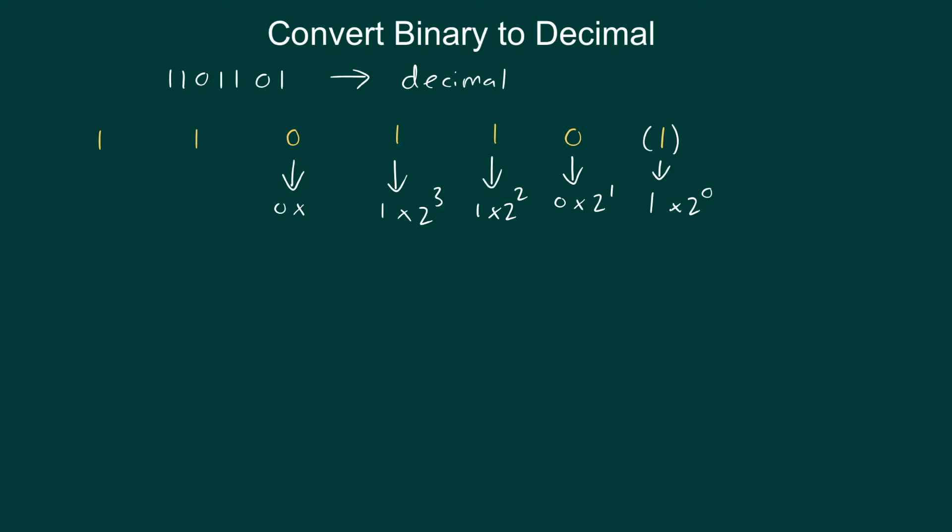So 0 times 2 to the 4. 1 times 2 to the 5. And 1 times 2 to the 6. And you'll see these zeros actually don't matter because 0 times anything is 0. So you could ignore these or skip this step completely.